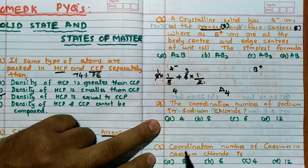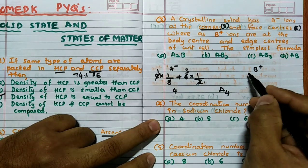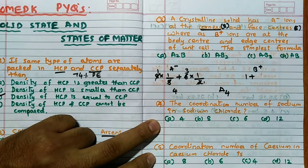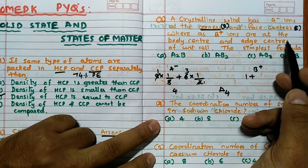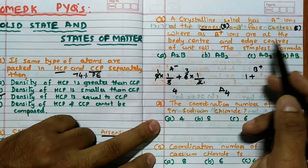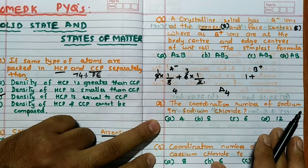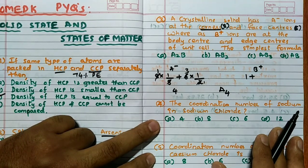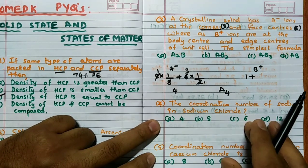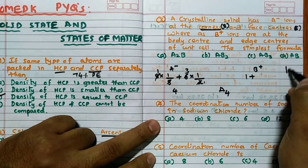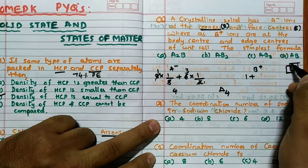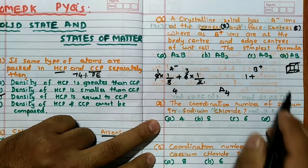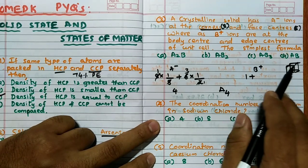Then B plus if you see, body center is only 1. Body center means each unit cell will have 1, it is not shared with any unit cell. But edge center is how many? Remember, total 12 edge centers will be present in the cube. Each 12 lines are there total.